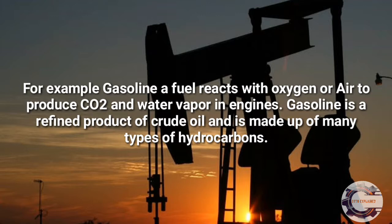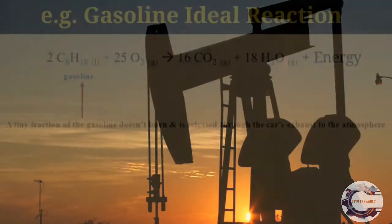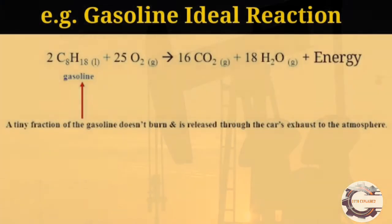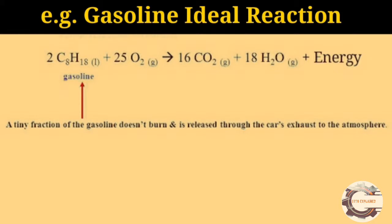Gasoline is a refined product of crude oil and is made up of many types of hydrocarbons. Gasoline is usually approximated as being made up of only octane, whose chemical formula is C8H18. The octane reaction is exothermic, and the energy released is approximately 45 megajoules per kg, which is the calorific value, heating value, or heat of combustion.